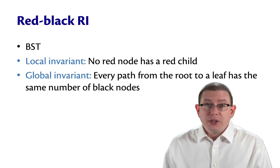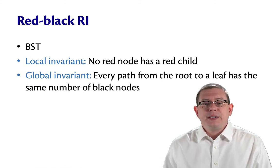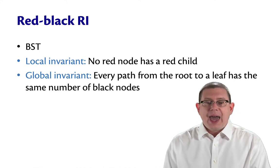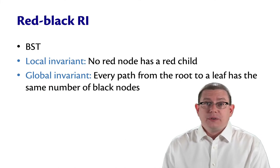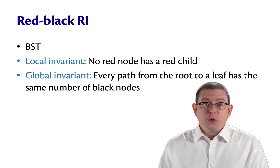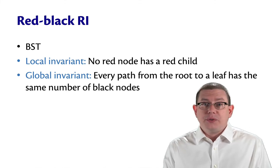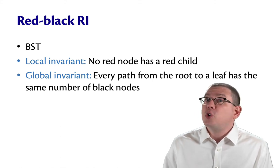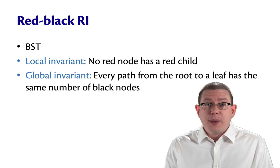The global invariant, though, is something that is not so easy to check. The global invariant says that every path from the root to a leaf has the same number of black nodes. So, if one path from the root to a leaf has five black nodes, then all of them have to have five black nodes. Now, that doesn't mean all the paths have the same length. Some of them could have some reds interspersed in between. But they've all got to have the same number of black.